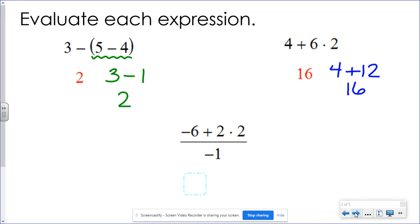But in this problem I would be starting with this two times two because I have to multiply before I add. So I'm gonna have negative six plus two times two is four and then it'll be divided by negative one. So in the numerator again negative six plus four that would be negative two and then dividing by negative one since they're the same signs we're gonna get a positive answer. And that'll be a positive two.